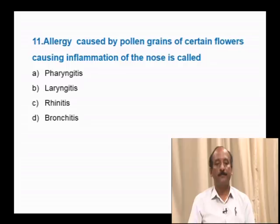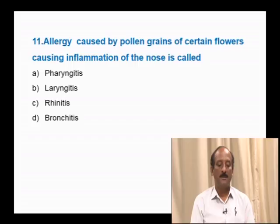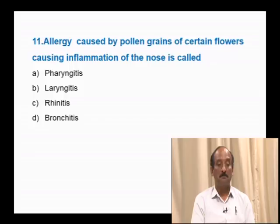Question number 11: Allergy caused by pollen grains of certain flowers causing inflammation of the nose is called — pharyngitis, laryngitis, rhinitis, bronchitis. Pharyngitis means inflammation of the pharynx; laryngitis means inflammation of the larynx; rhinitis means inflammation of the upper part of the respiratory system, i.e., the nose; bronchitis means inflammation of the bronchi. The inflammation of the nose is rhinitis. The correct answer is option C.